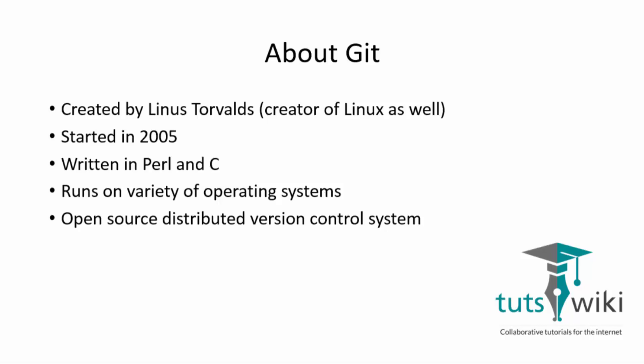What that means is I can fork the main repository, make my changes, and issue a pull request to the project maintainer. The project maintainer will then pull those changes to the official repository. That's all you need to know about what is Git.